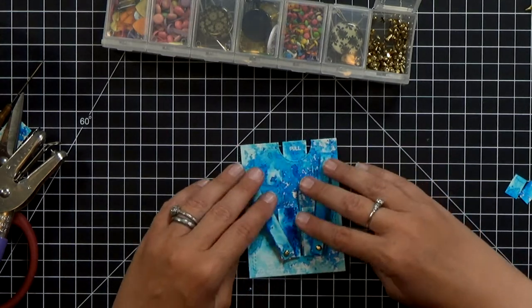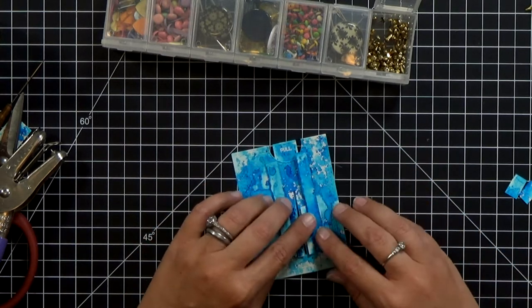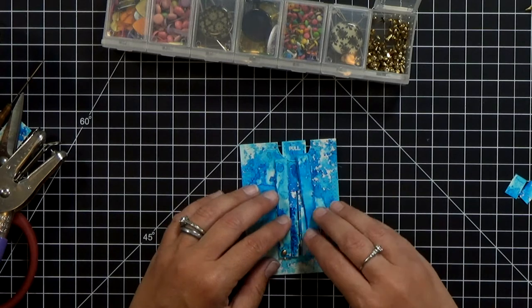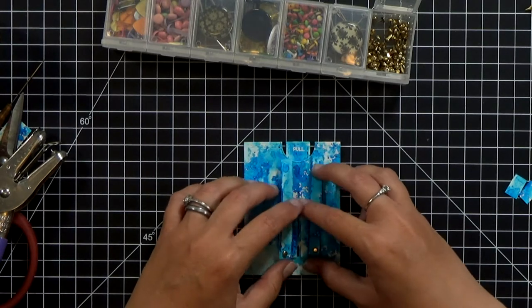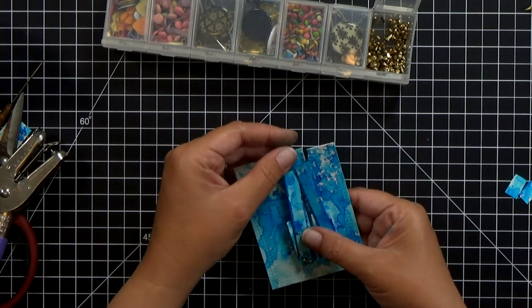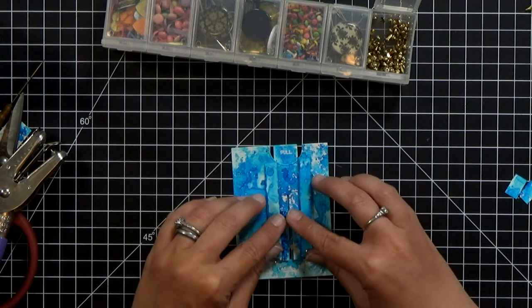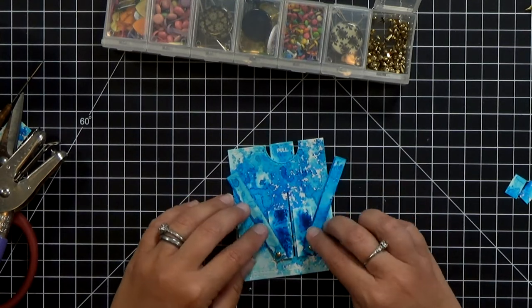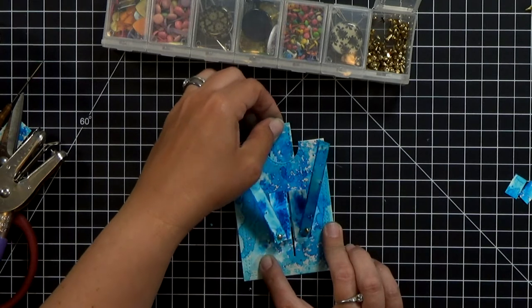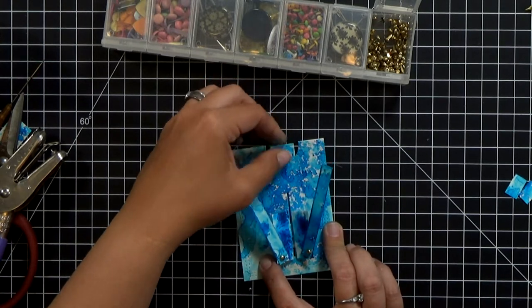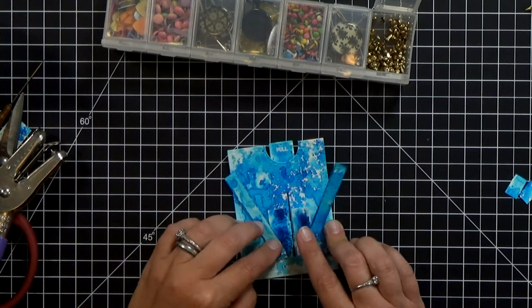Now I'm going to kind of play with the spacing and figure out how tall or where to glue the pull tab in place on the back. I'm sorry, the pull tab is not going to be glued in place. I'm going to glue the slider portion to the pull tab but I need to figure out the placement.